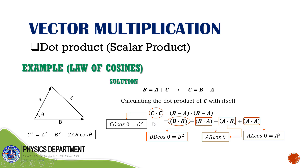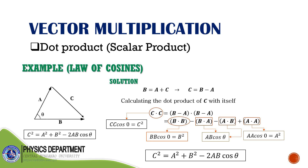Therefore, using the dot product we have proved c² = a² + b² − 2ab·cosθ. Notice when theta is 90°, the triangle becomes a right triangle, the 2ab·cosθ term vanishes, and we recover the Pythagorean theorem: c² = a² + b², since cosine 90° equals zero.